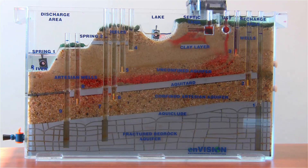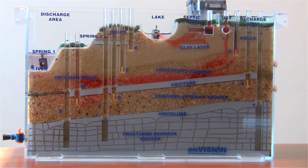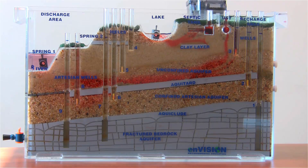Not only does the contamination follow groundwater flow, it can easily discharge into nearby lakes and rivers too. For both point source and non-point source pollution, some dye remains in the ground just like actual contaminants, leaving behind a residue.